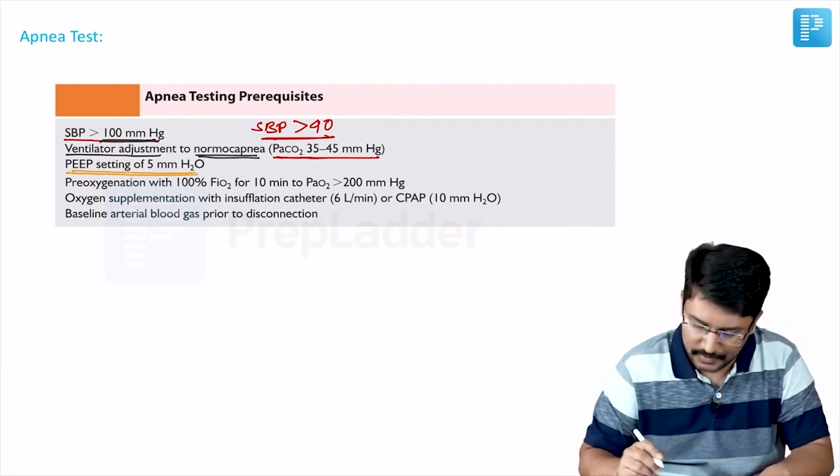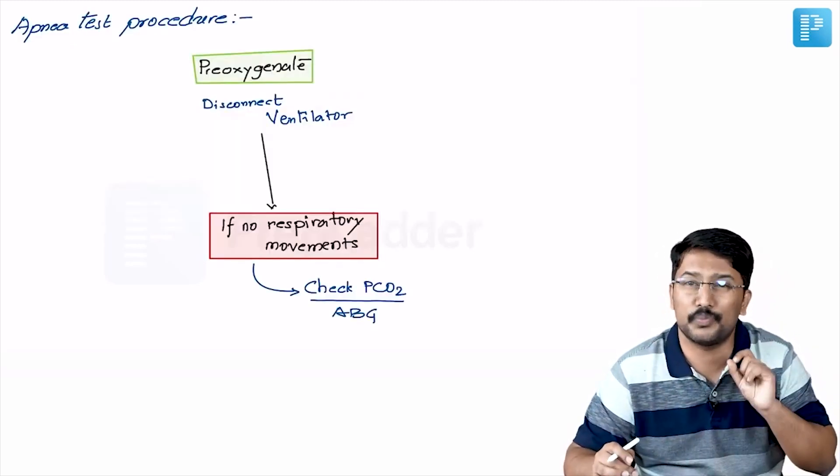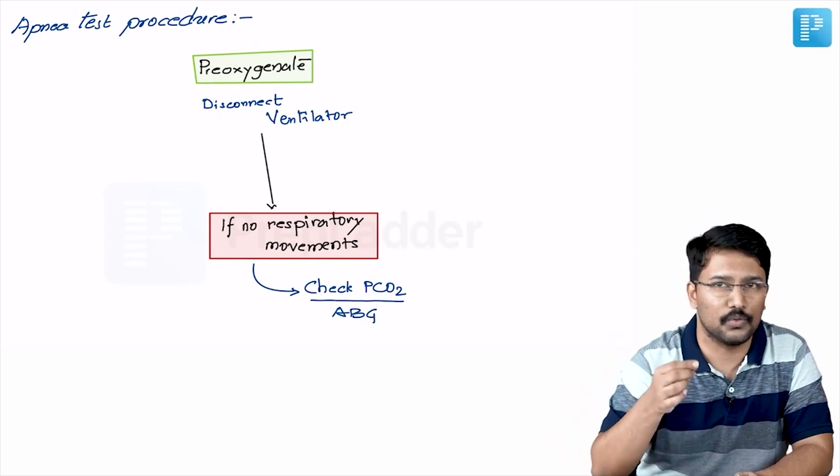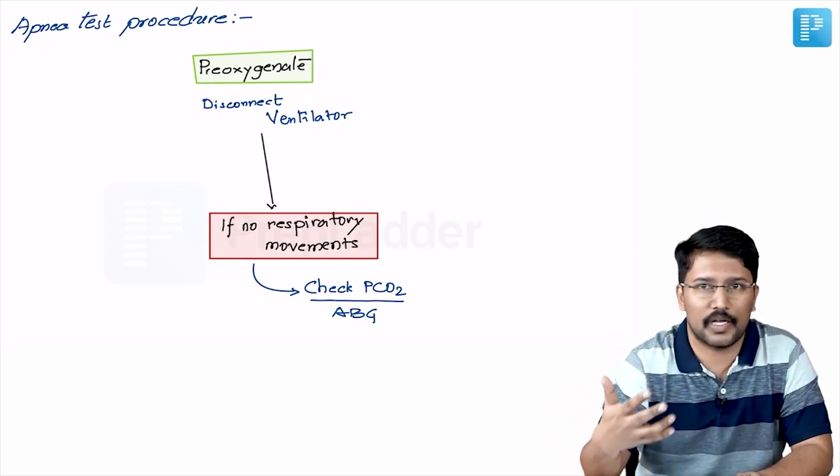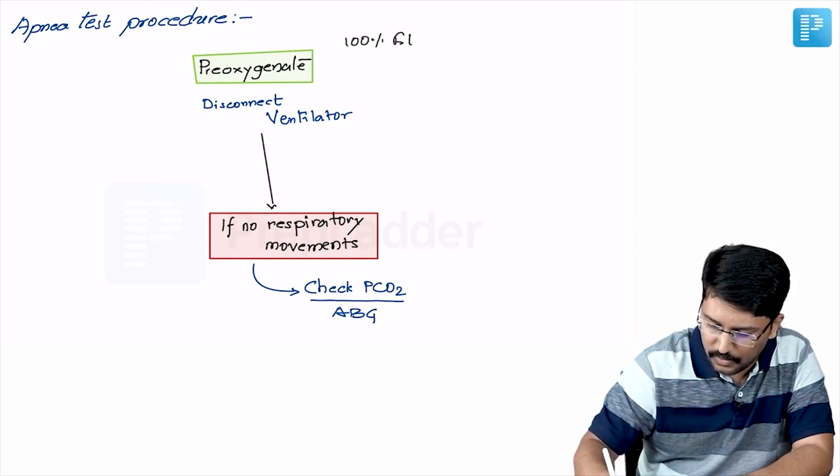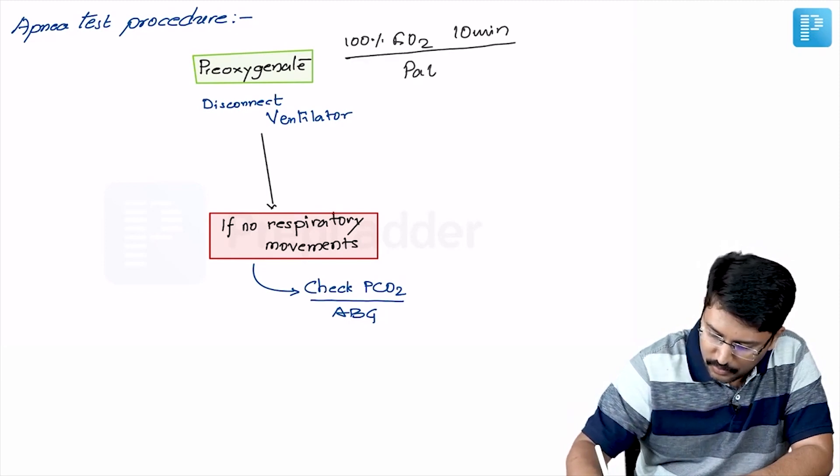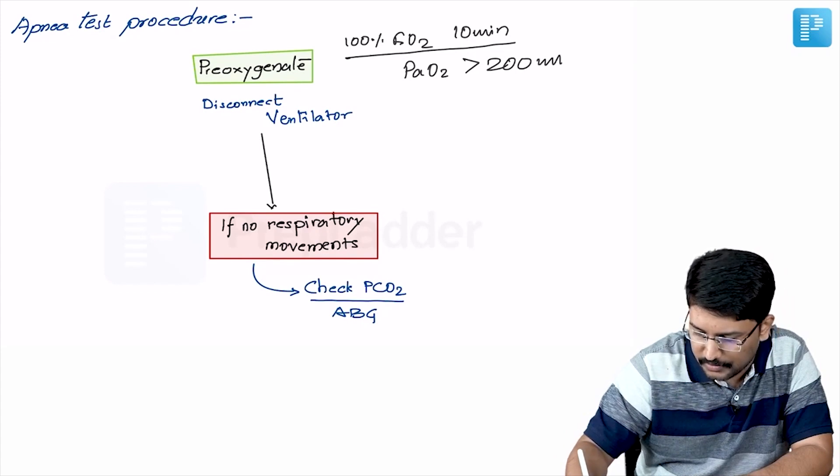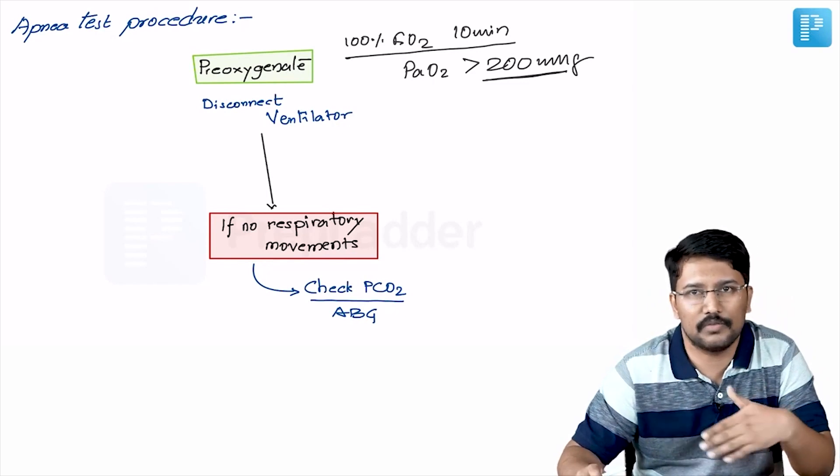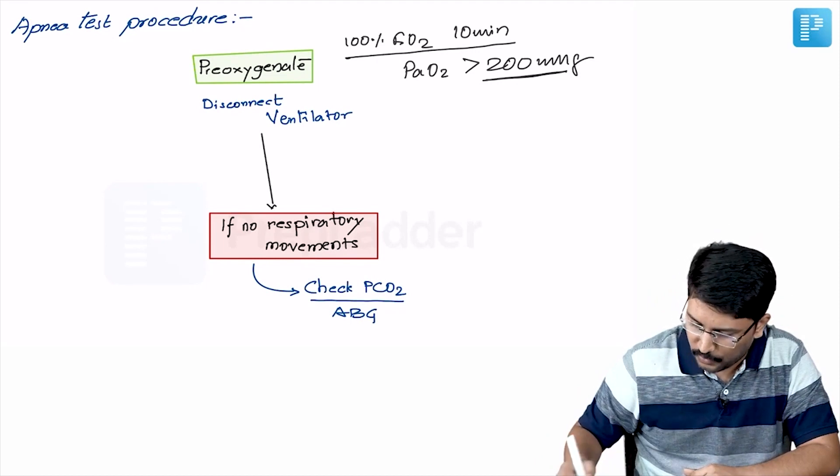Once these prerequisites are met, next is to start the process. The first step is we should pre-oxygenate the patient. Basically, we don't want hypoxia to trigger the respiration or we don't want the patient to start down spiraling because of hypoxia. So we should pre-oxygenate it by giving 100% FiO2 for around 10 minutes so that we end up achieving PaO2 of more than 200 millimeters of mercury. This oxygenation is sufficient to sustain oxygenation for around next 8 to 10 minutes. That is the duration of this test.